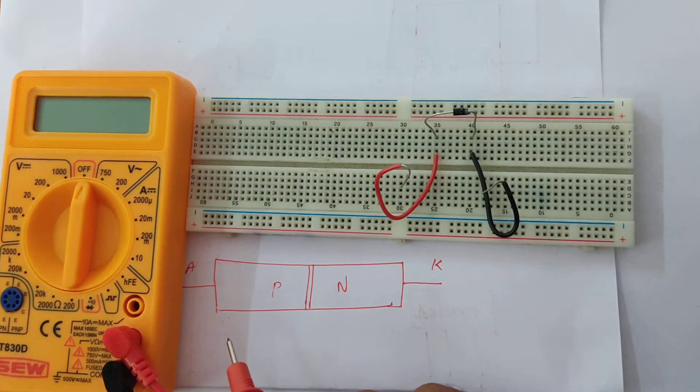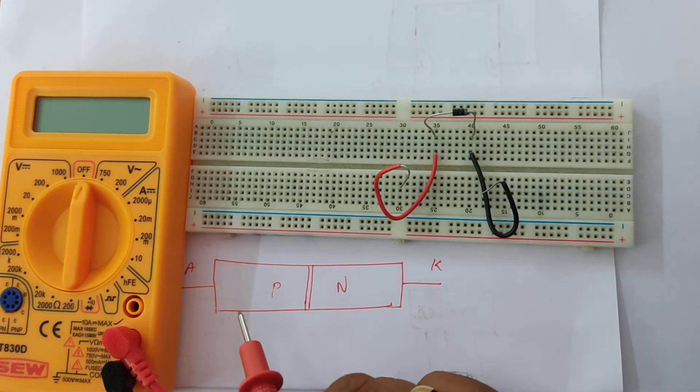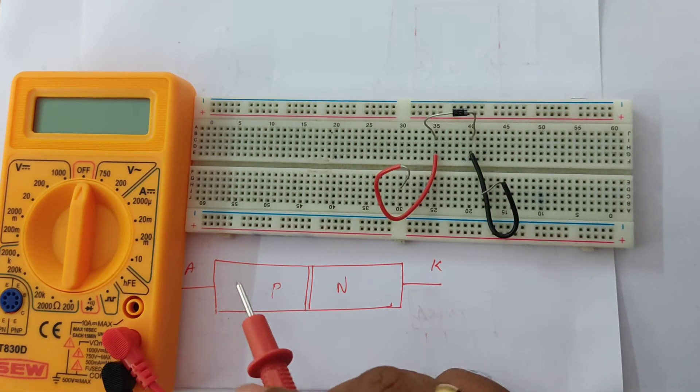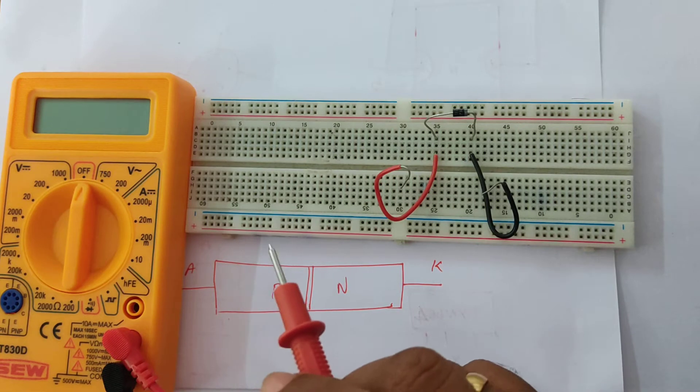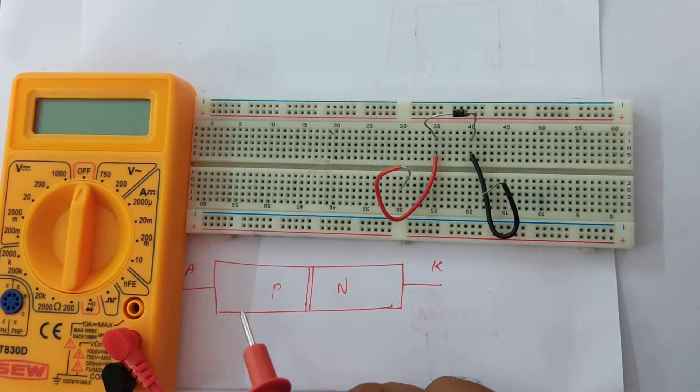So now what we are going to do is measure the forward resistance and the reverse resistance. As you all know, the PN junction diode conducts only in one direction and doesn't conduct in the reverse direction.